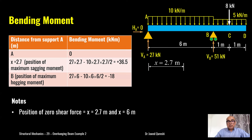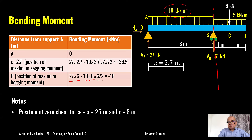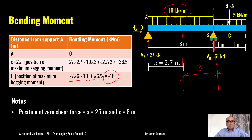Simplifying gives +36.5 kilonewton-meters — the maximum sagging bending moment. Now for the moment at B, taking from the left side: 27 × 6 (clockwise) minus 10 × 6 × (6/2) (moment due to UDL), which gives −18 kilonewton-meters — the maximum hogging bending moment.